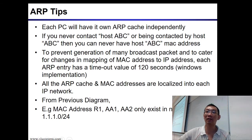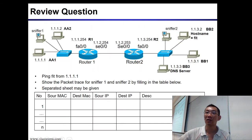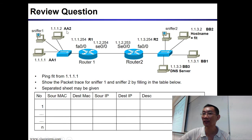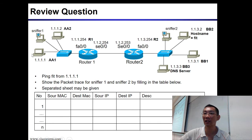Another thing about address resolution: each PC has its own ARP cache. So if you have never contacted a host, you will never have the host MAC address. Let's say 1.1.1 has never contacted 1.1.2 and vice versa — so AA1 will never have AA2's MAC address. The address cache is local in the database.